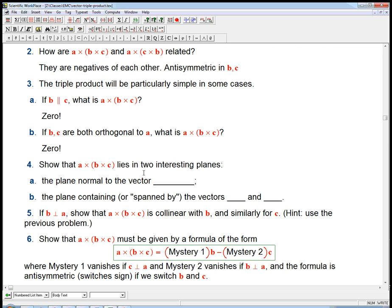So what about more about a cross b cross c? When it's not zero, what is it? Where is it? The claim is it lies in two interesting planes. One is the plane normal to the vector, and we're supposed to fill in the blank here. And the other one, the plane containing or spanned by these two vectors. This is a nice little thing about planes. Nice little review of planes. Two ways to describe a plane.